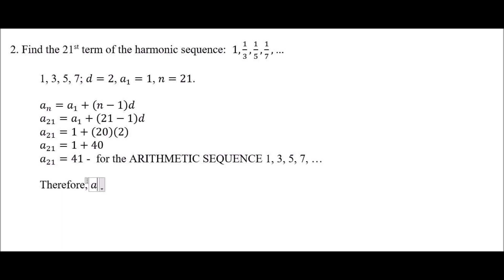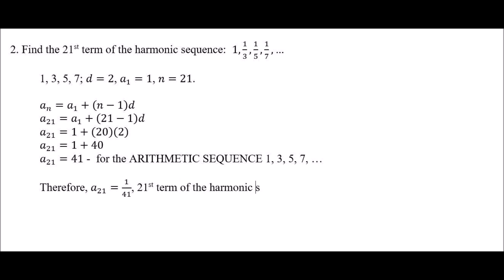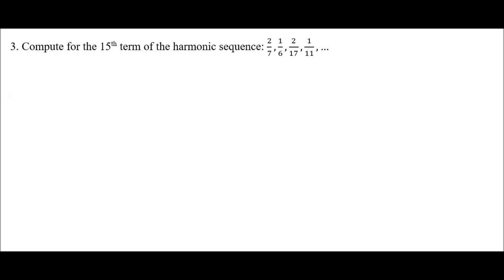Therefore, a_21 equals 1/41. This is the 21st term of the harmonic sequence 1, 1/3, 1/5, and 1/7, and so on. For number 3, this will be left as an exercise. You need to compute for the 15th term of the harmonic sequence 2/7, 1/6, 2/17, 1/11, and so on. Thank you, and see you again.